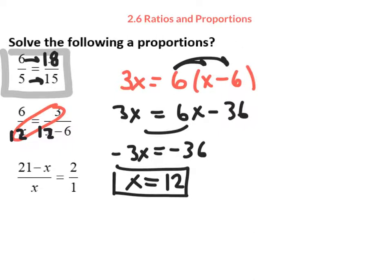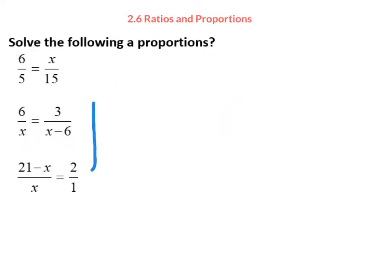And if you put in a 12 there, 3 divided by 6 is also 1 half. In this final situation, we would multiply across, cross multiplication, and get 2x. And we would get 21 minus x. Again, I would gather my x's by adding an x to both sides, and then solving for x equals 7. Very simple mathematics.